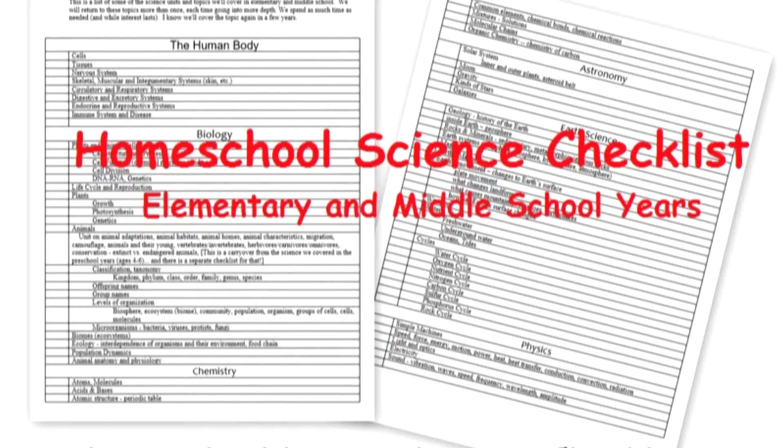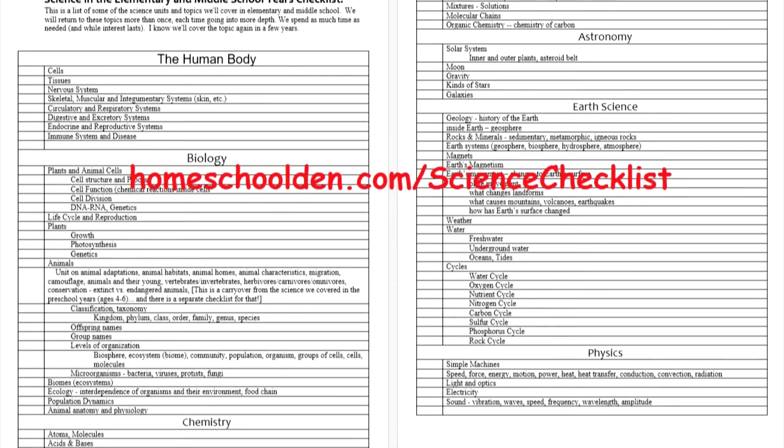First, you might want to check out the free science checklist I created. It's over at homeschoolden.com/science-checklist. This is a list of the units I hope the kids cover in elementary and middle school, and it includes more than 50 topics.